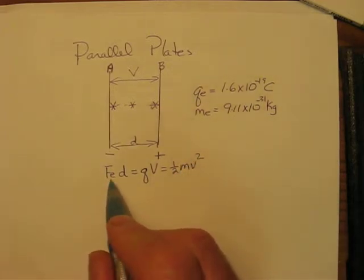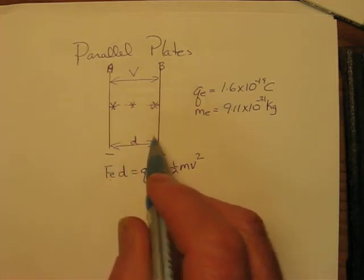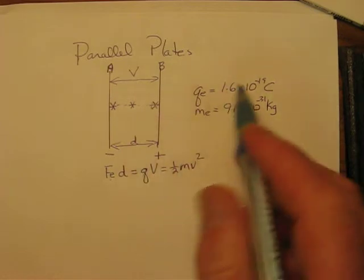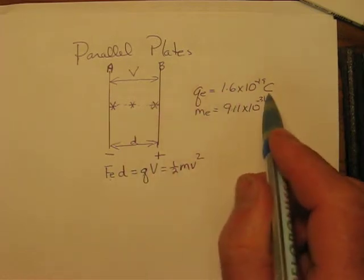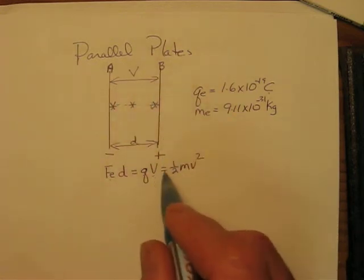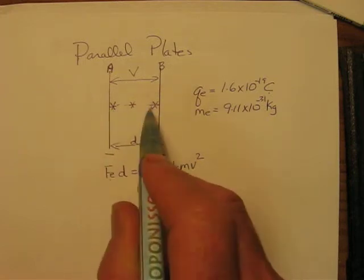The electric force between the plates times the distance between the plates is equal to the charge measured in coulombs. If it was an electron, it would be this many coulombs times the voltage. The voltage between the plates is usually given, and that equals the kinetic energy of the particle if it's moved across the plate.